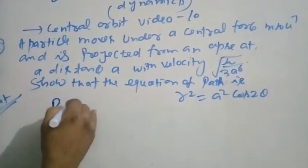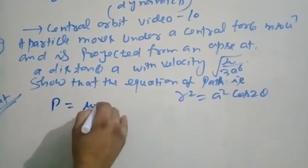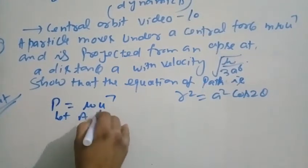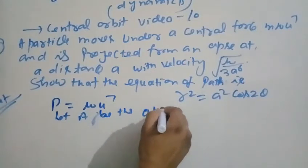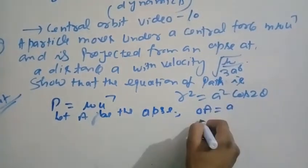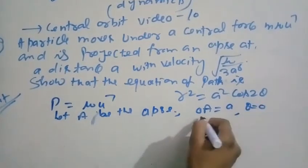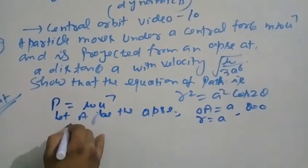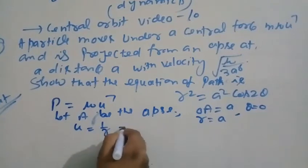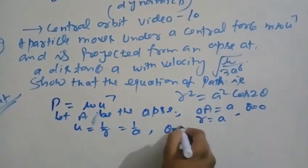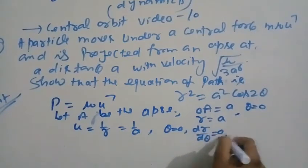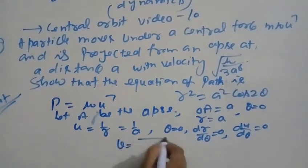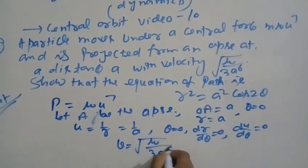For the force μu⁷, at apse: when θ = 0, r = a. Therefore u = 1/a and θ = 0, dr/dθ = 0. The velocity v = √(μ/3a⁶).